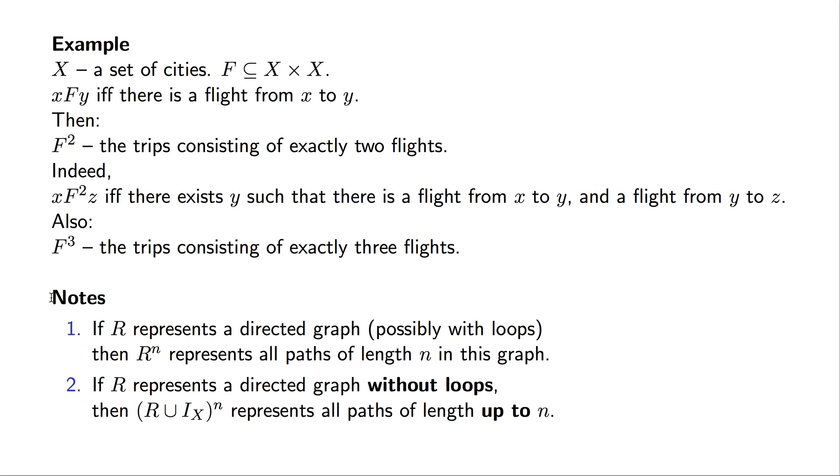Here is a remark concerning paths in directed graphs. If a relation R represents a directed graph which may have some loops, then R to the nth power represents all paths of length n in this graph.